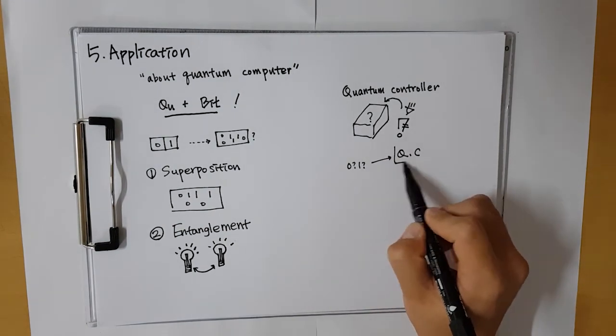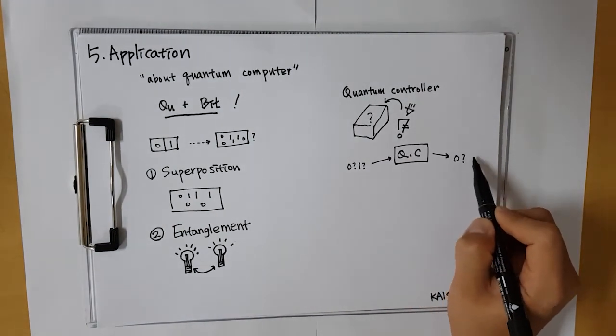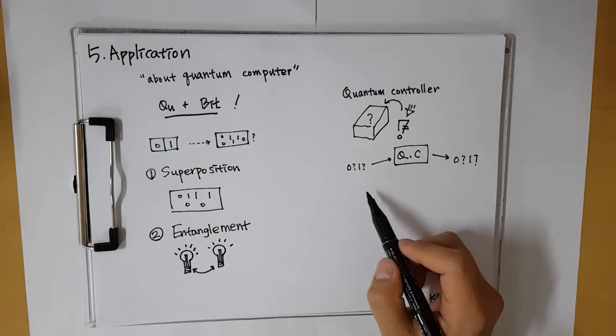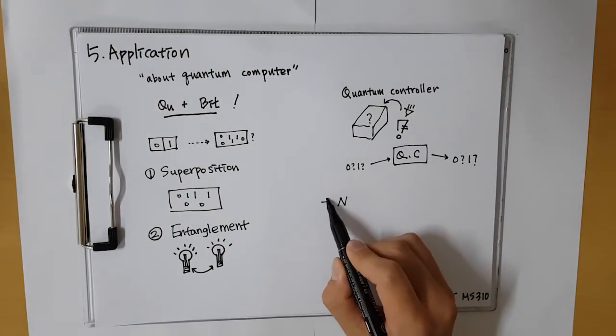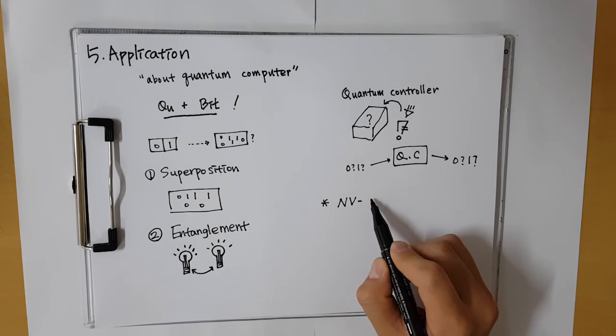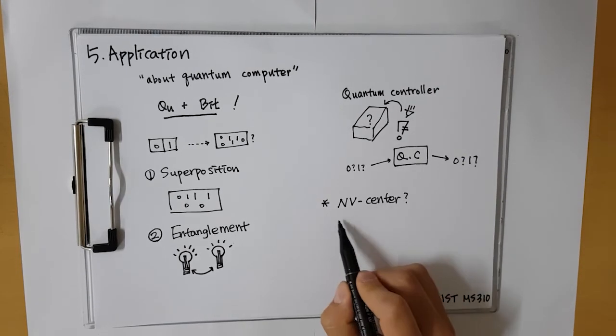The controller just receives the input value of the superposition, derives the result value through the principle of probability, and outputs the result value in the form of the superposition.